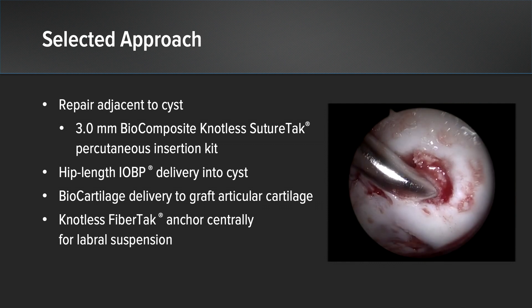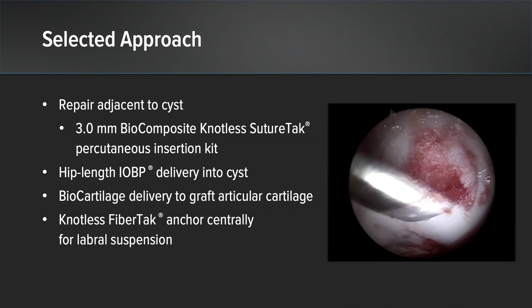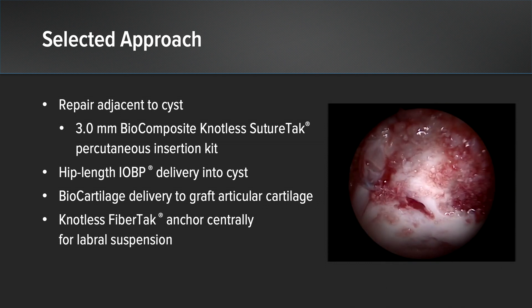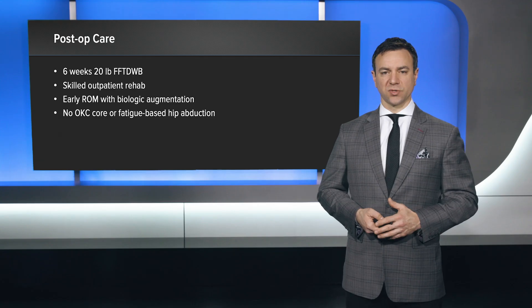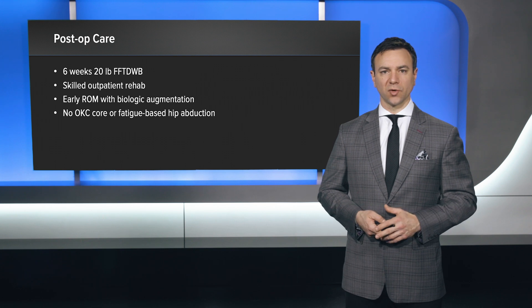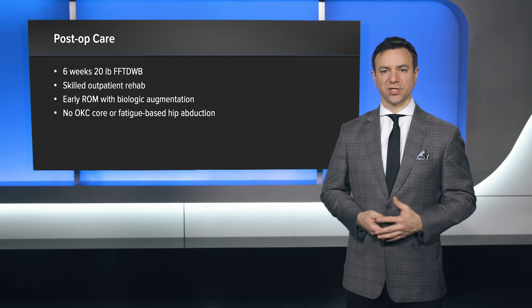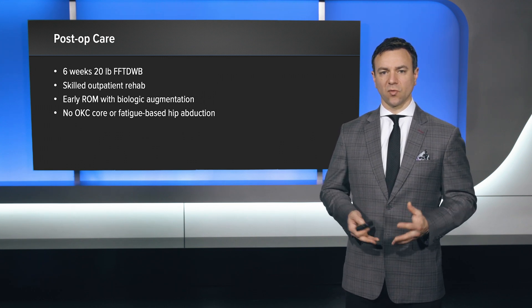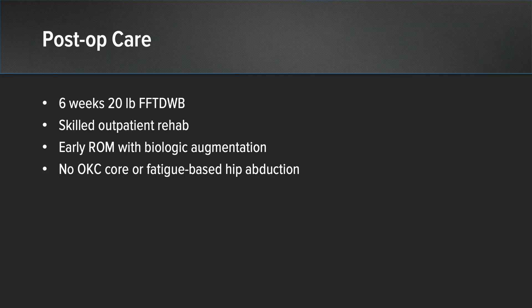After the dual grafting was complete and matured using fibrin glue, a knotless fiber tack was placed just above the drill tunnel from the IOBP needle to create a central suspension in the labrum, further stabilizing the final repair construct. Post-operative care was initiated immediately after surgery with early range of motion. Hips in general provide an intense biologic healing response, made even more aggressive by bioactive substrates, so early range of motion is extremely important. Protected weight bearing was utilized for the first six weeks of foot-flat touchdown weight bearing. Skilled outpatient rehabilitation is crucial to ensuring an optimized outcome.